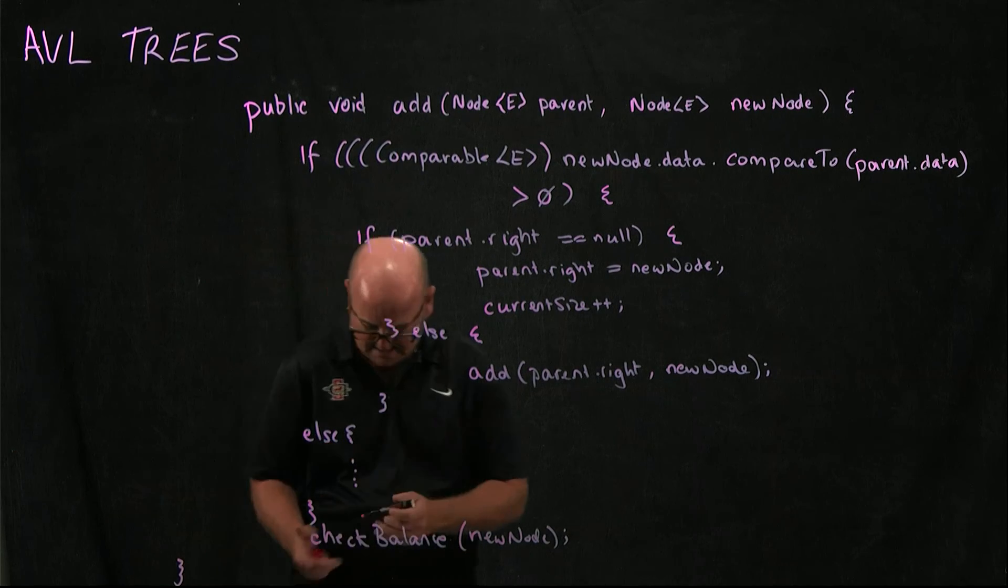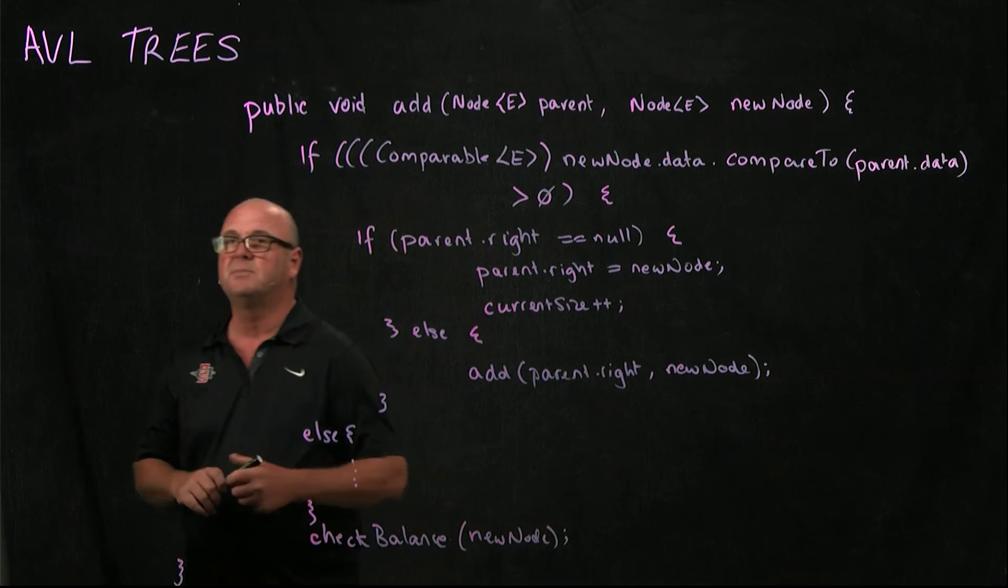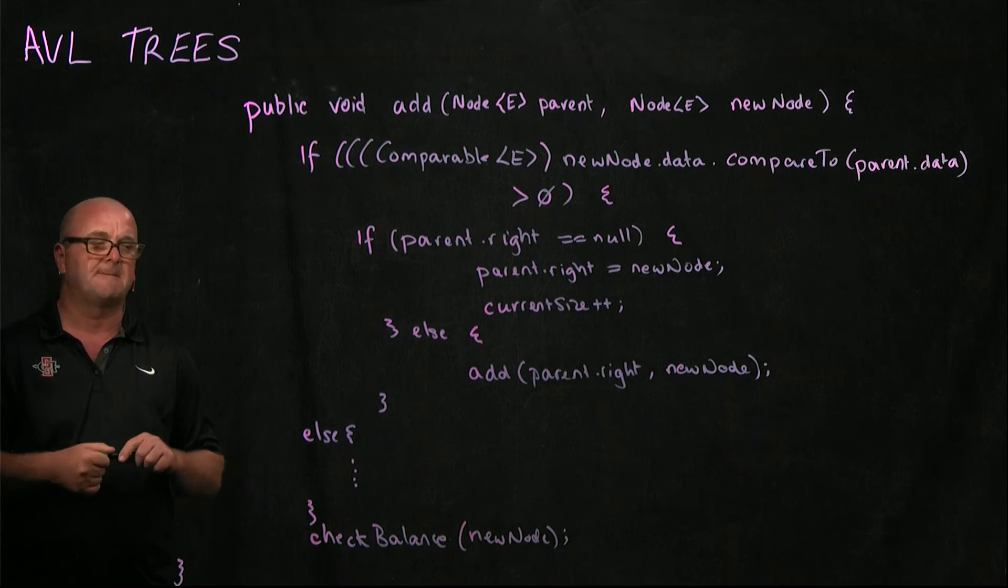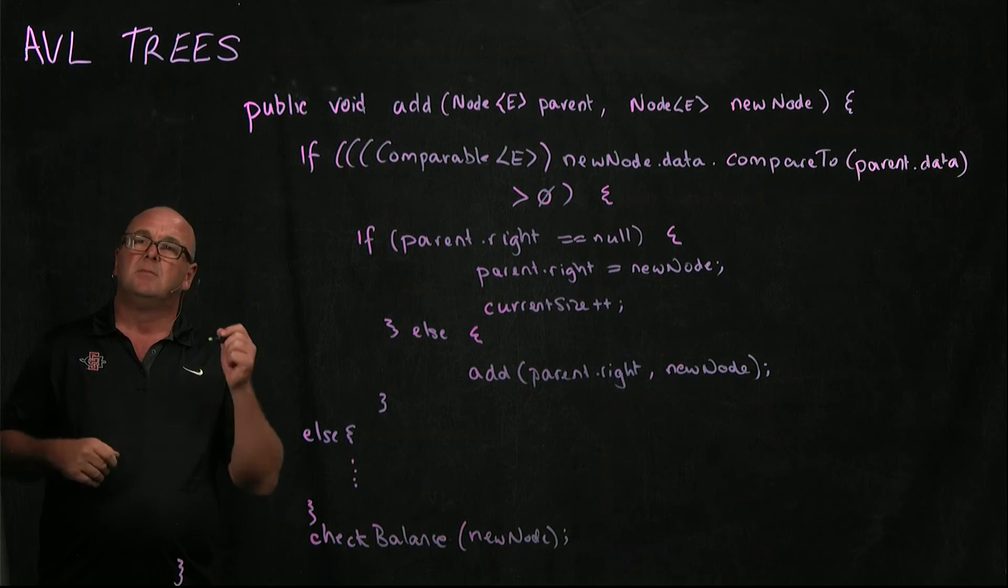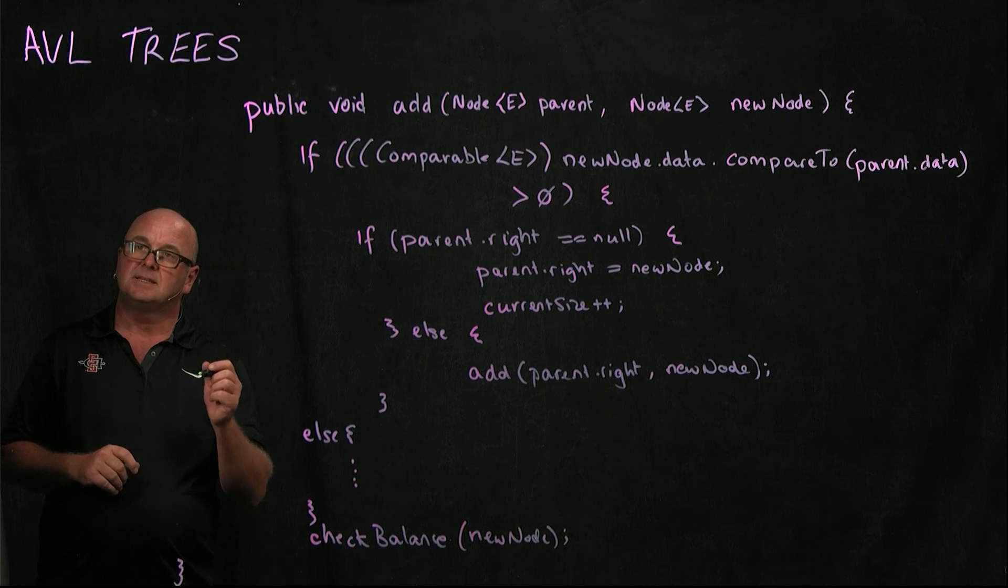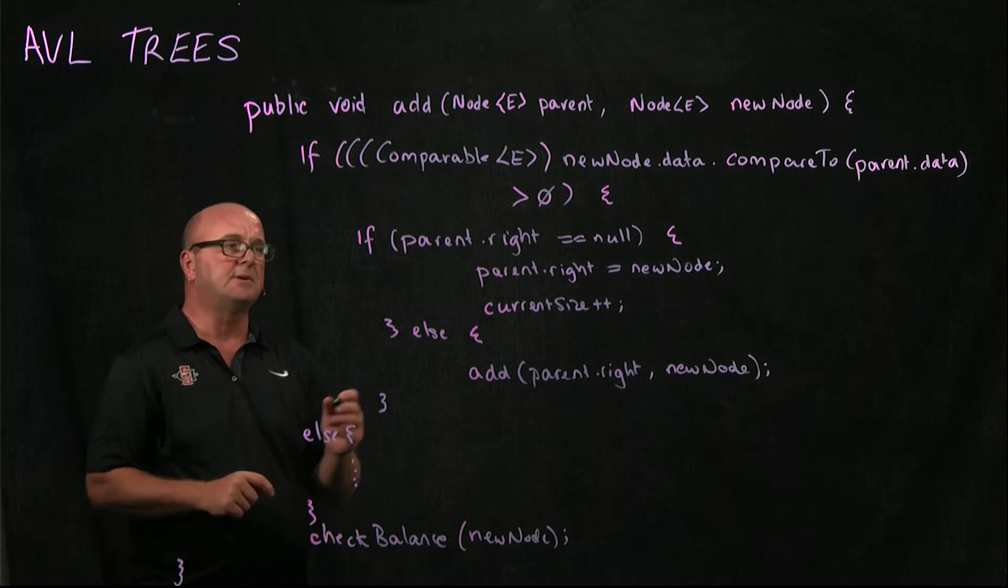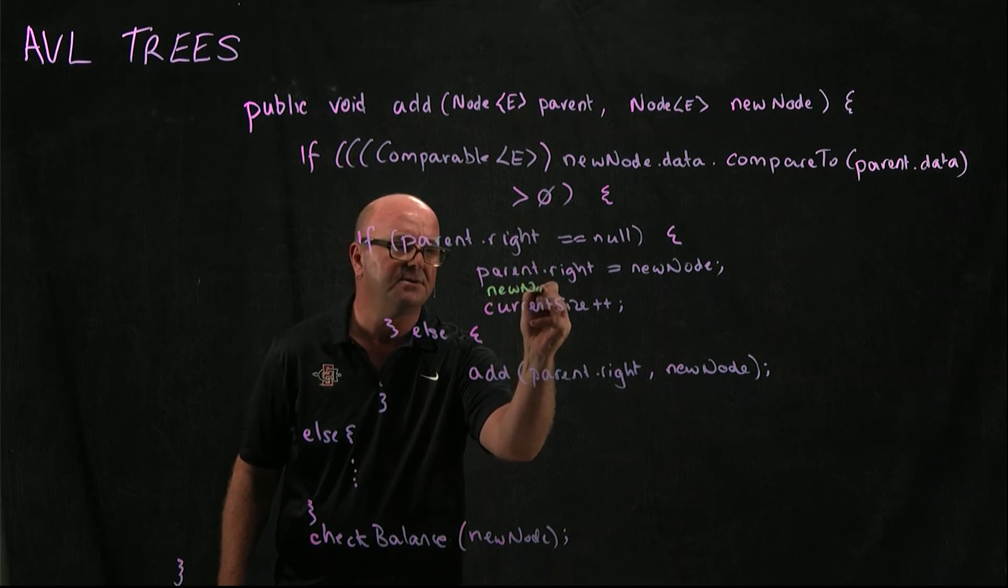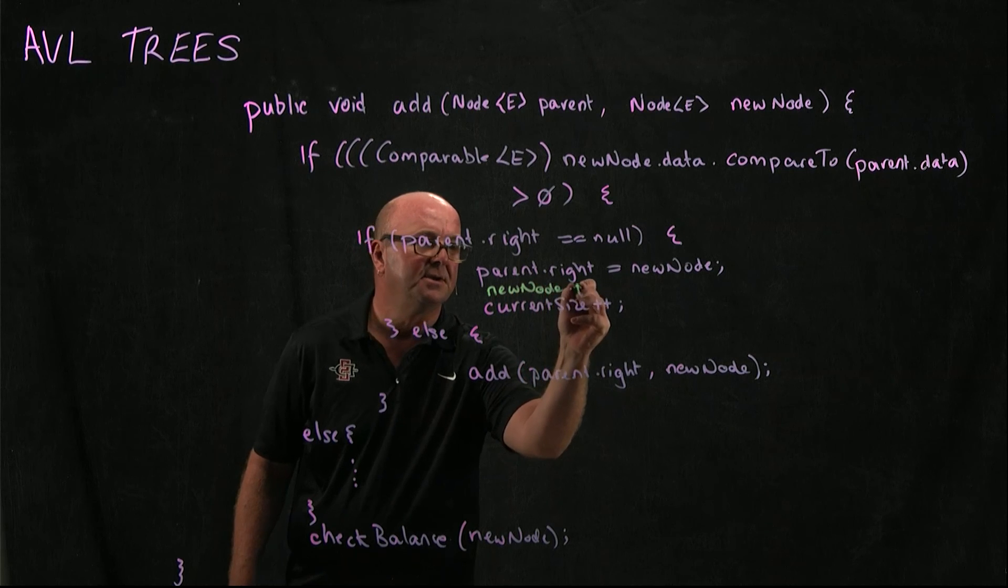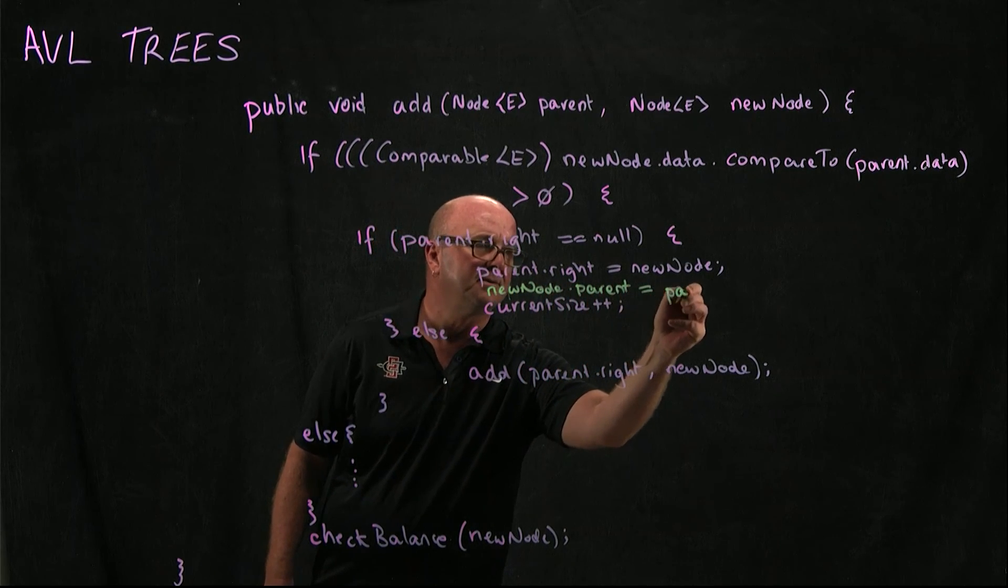I just realized that I have missed one critical piece right here. What did I miss? I set parent.right equal to newNode. But what I didn't do is I didn't set newNode's parent to our current node. So here we need to say newNode.parent is equal to parent.